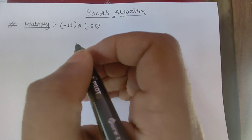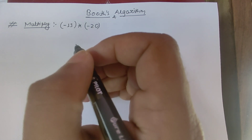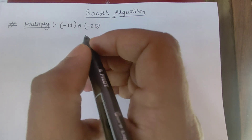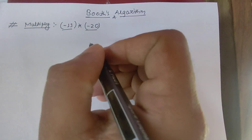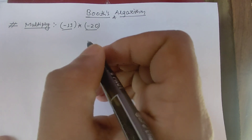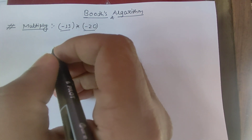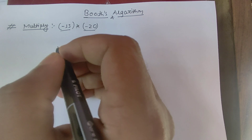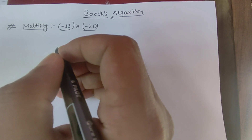Hello everyone. Today I am going to perform the multiplication operation with the help of Booth's algorithm. Our question is to multiply minus 13 with minus 20. We have already discussed the considerations and the Booth flowchart in previous videos, so today we are going to start the Booth algorithm.